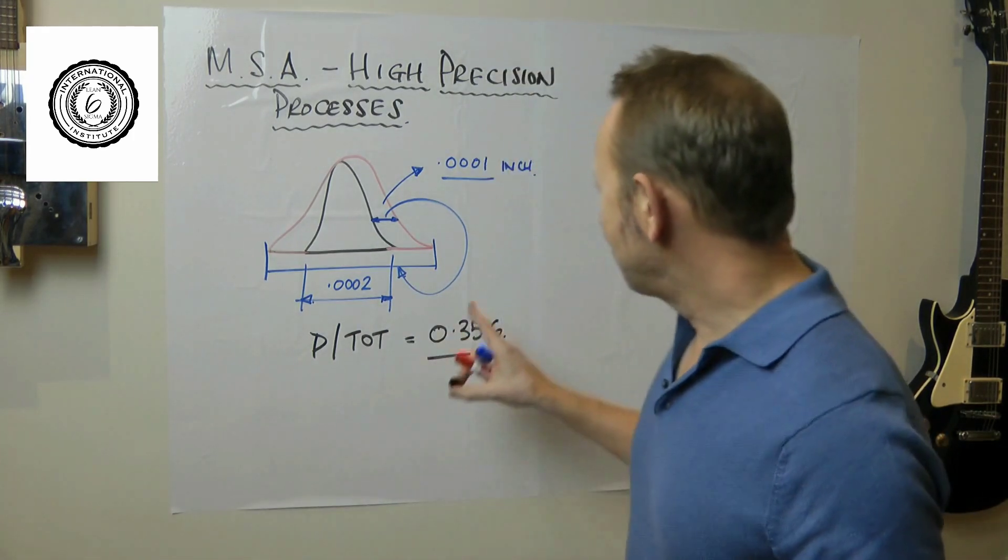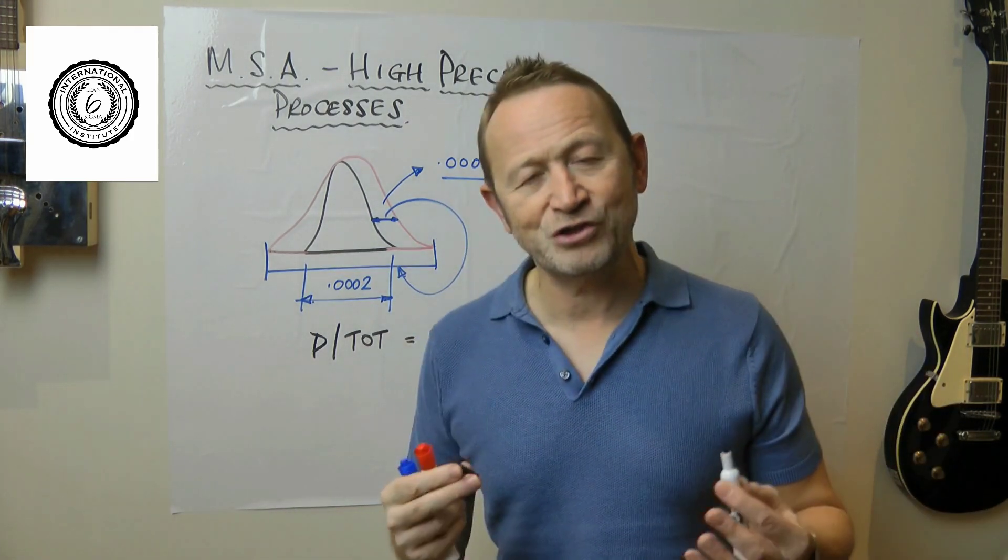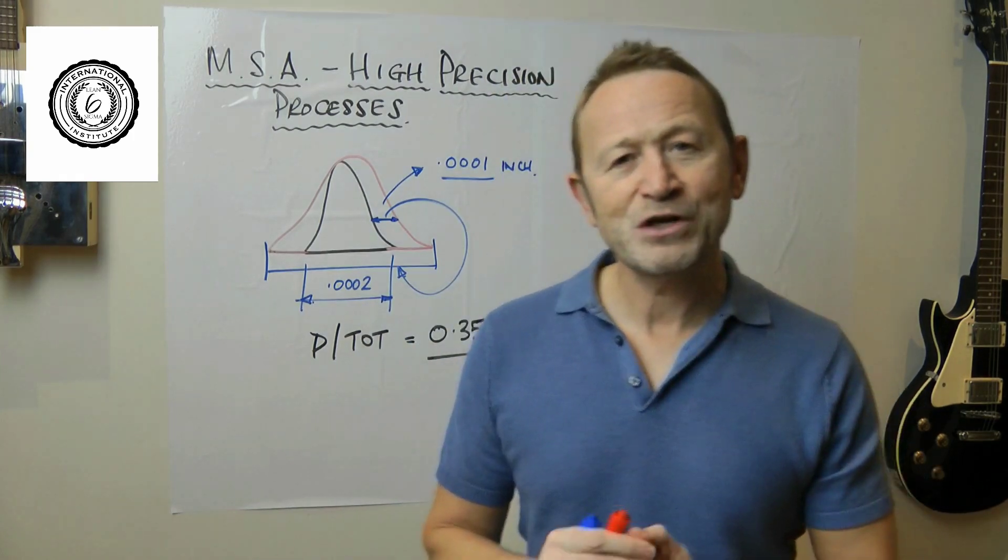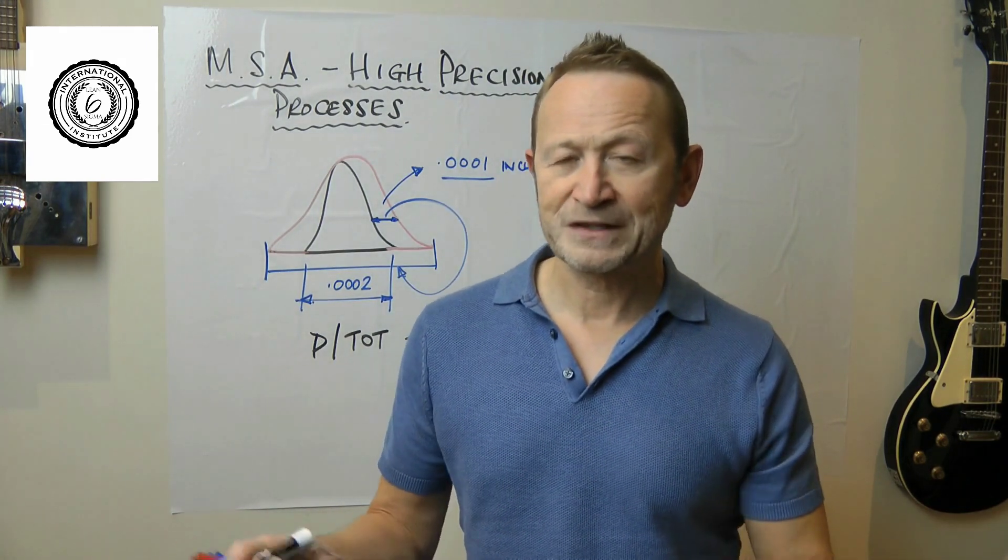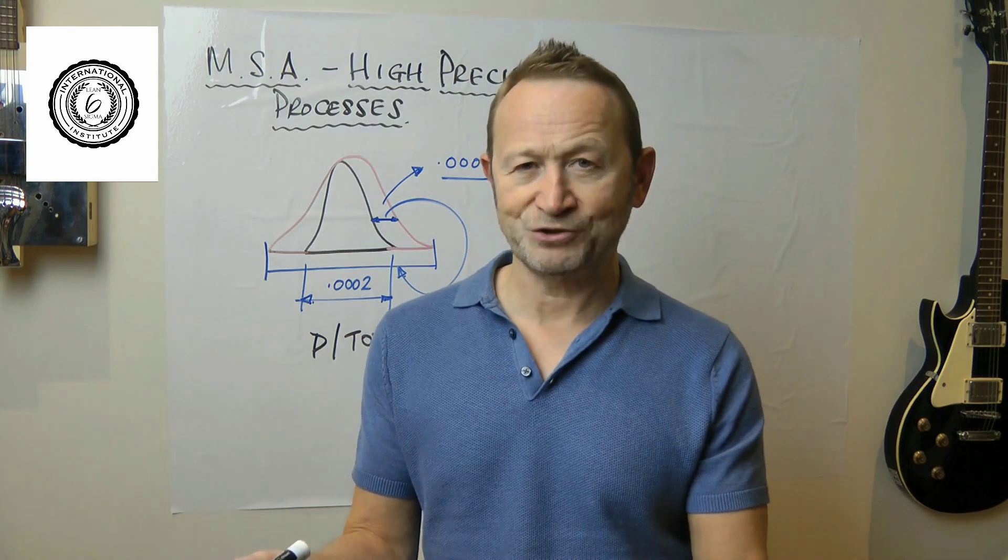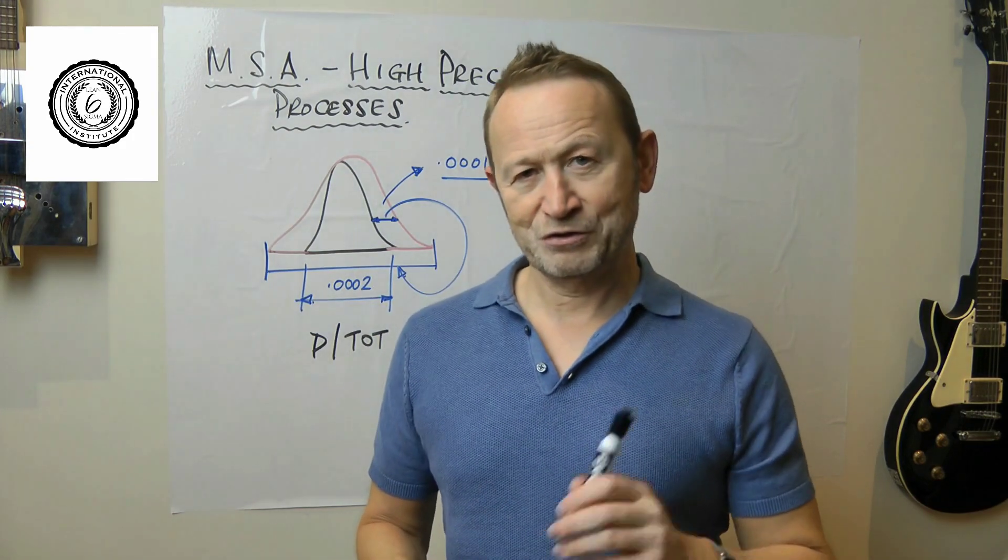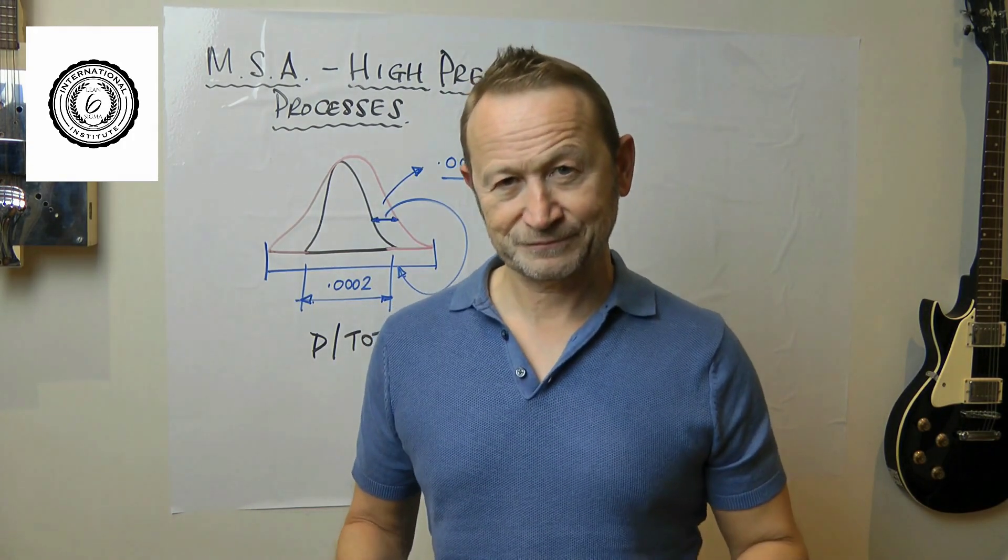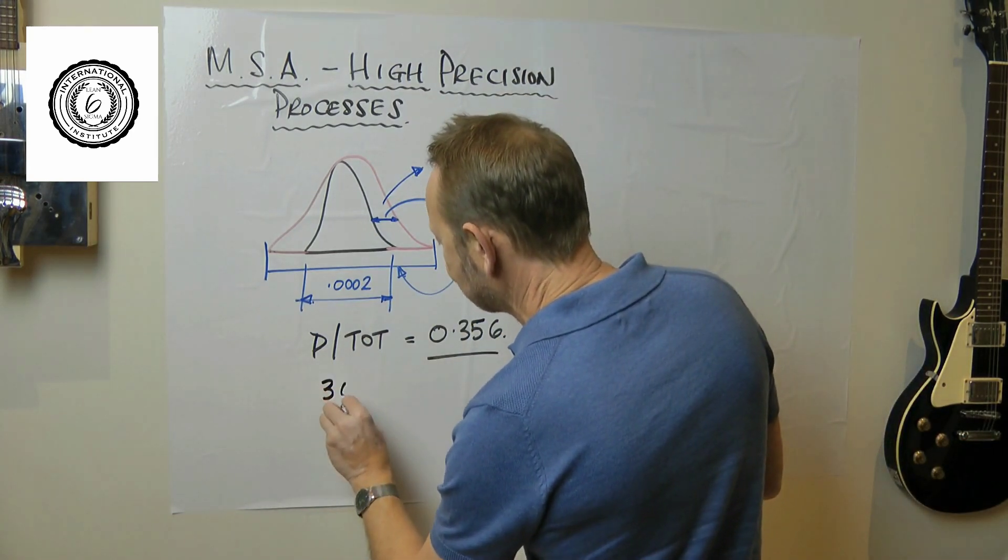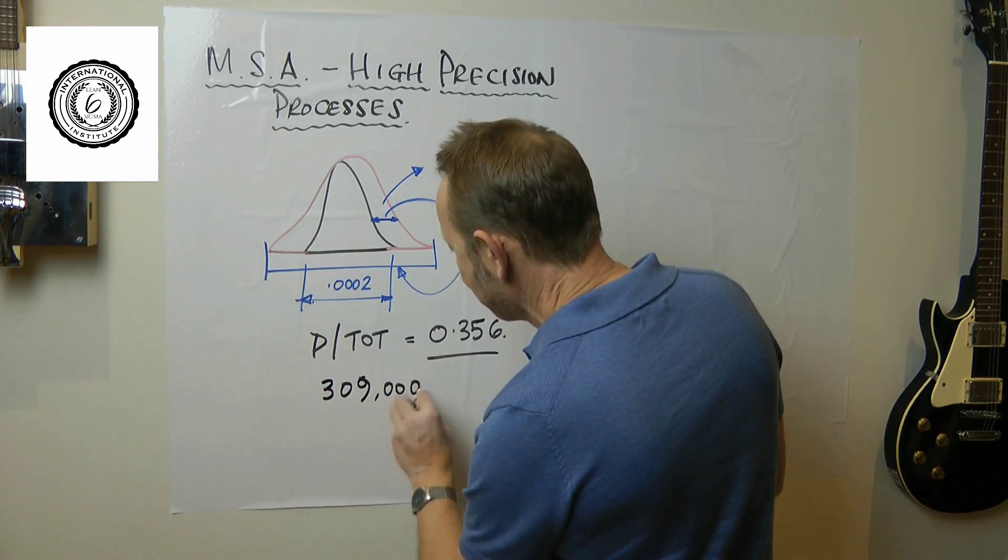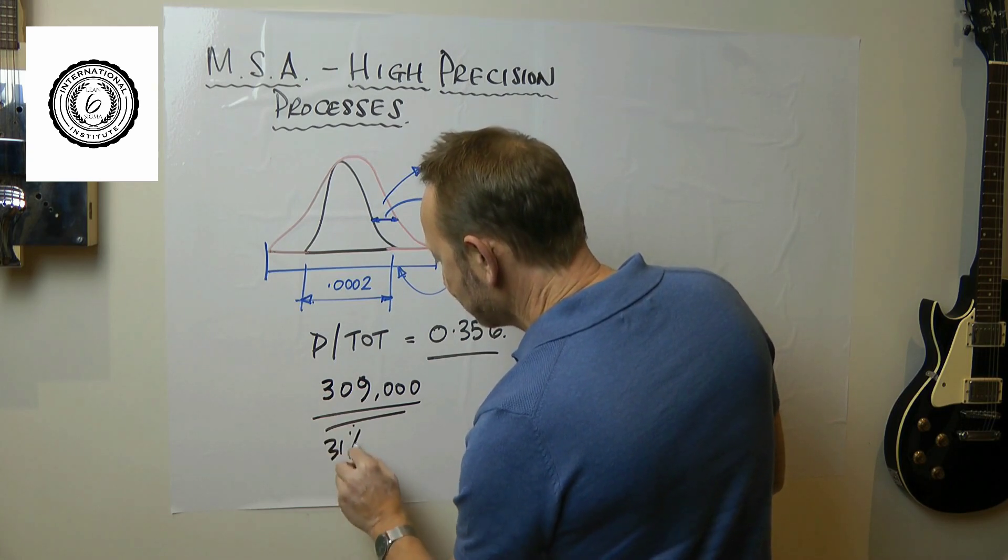This wouldn't be an indication of a problem to me. Now there is a slight problem and we need to look at another diagram on the MSA. Let's go back to the Excel pages and take a look at the misclassification graph. You can see the misclassification graph here and it says that the misclassification rate is 309,000 in a million. In other words, almost 31% of the parts could be misclassified.